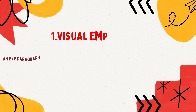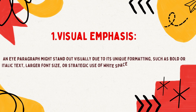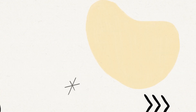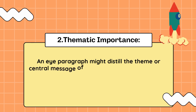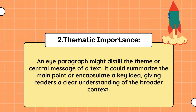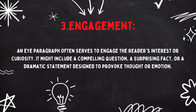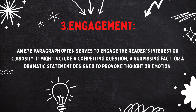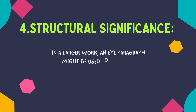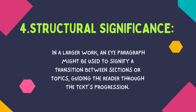Significance of an eye paragraph: an eye paragraph might stand out visually due to its unique formatting such as bold or italic text, larger font size, or strategic use of white space, guiding the reader's focus and highlighting key information. It might distill the theme or central message of a text, summarizing the main point or encapsulating a key idea. It can also engage the reader's interest through a compelling question, a surprising fact, or a dramatic statement. In a larger work, it may signify a transition between sections or topics, guiding the reader through the text's progression.